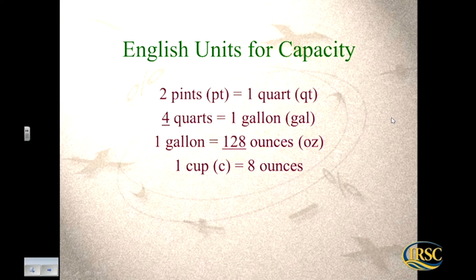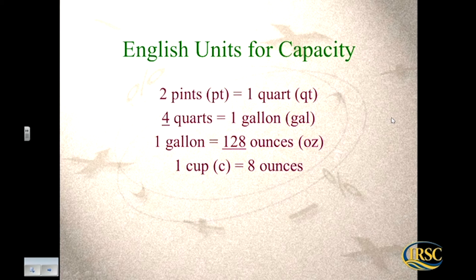Now we're going to talk about capacity — how much an item can hold. Two pints equals one quart. Four quarts equals one gallon. One gallon equals 128 ounces. One cup equals 8 ounces. This is mainly for the capacity of liquid, so if you like to bake or cook, or if you track your water intake, you're probably familiar with these units.